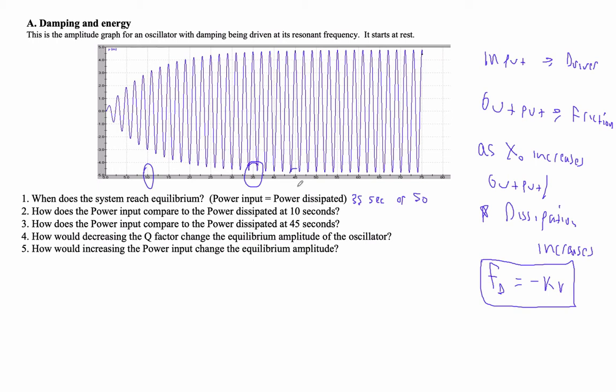At 45 seconds, notice the amplitude is not increasing, right? So therefore, the input has to equal the output. However much power is getting put in, it's not storing it, so it must be dissipating that. And that's the friction and everything.